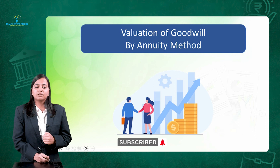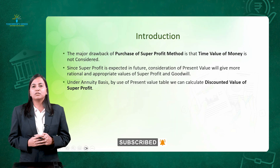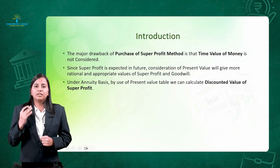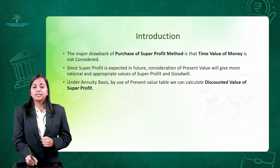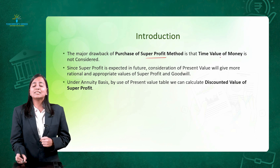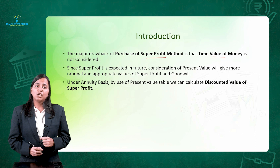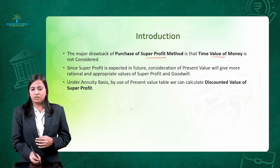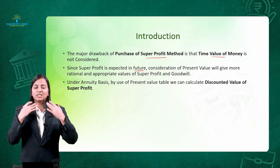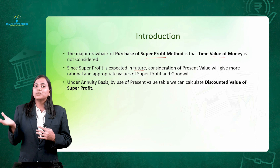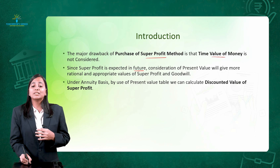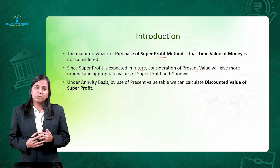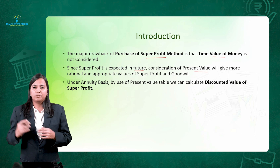When we look at the annuity method under super profit method, why is there a need to calculate using present value? The reason is when we calculate goodwill as per the super profit method, the time value of money is not considered. To address this drawback, we have the annuity method. Since the super profit you are expecting is going to be in the future, you should consider what the present value of this money is at this point of time.